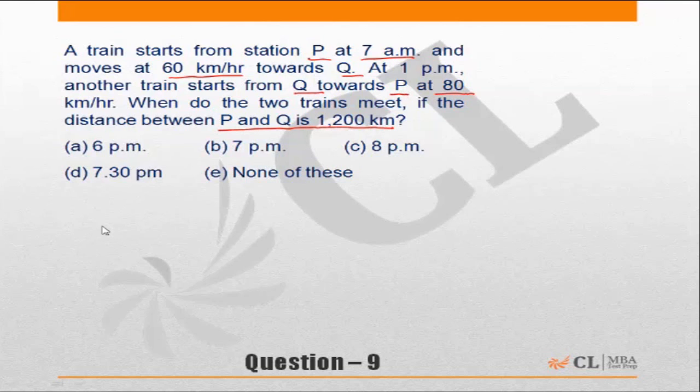So the question says the distance between P and Q is 1200 km. A train starts from P at 7am in this direction towards Q at the speed of 60 km per hour. And the other train from Q starts towards P at 1pm at the speed of 80 km per hour. When will the two meet?